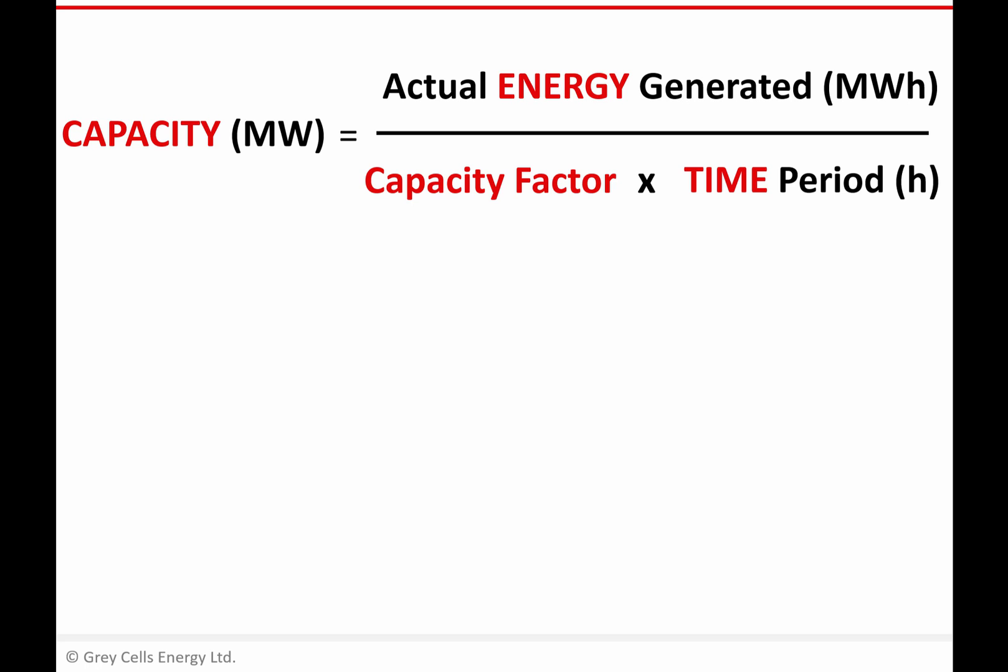So an example of that might be to say, well, how much capacity of wind farm do I need to build to provide enough energy to power 8,000 homes? You know the energy required. You might be able to estimate capacity factor based on other wind farms in that region or based on your wind resource measurements. And so you could use that to estimate how much capacity you would need to build, how many turbines you would need, how much land you would need, and so on.